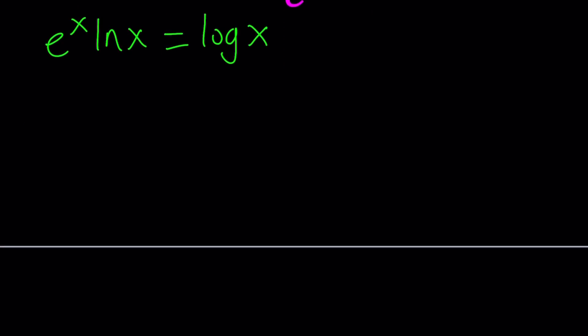Change of base, which you can call COB, works like this. Suppose you have log base b of a and you want to write it in a different base like x. You write it like this: you put the a here and the b here. The upper number is in the numerator and the bottom number is in the denominator. Easy, right?